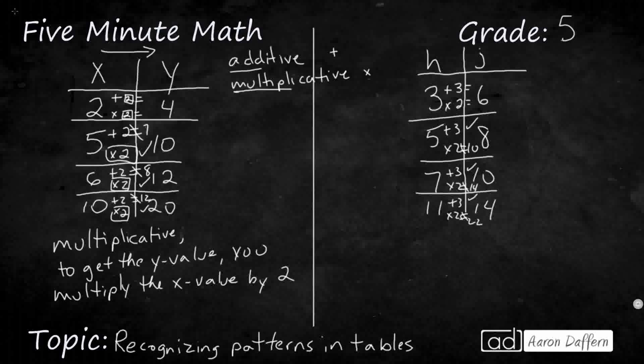All right. So whereas this first one was a multiplicative relationship, we can say this is an additive relationship, but let's explain why. And I'll write it slightly different. It's an additive relationship. And instead of saying, I could say to get the J value, you add 3 to the H value. We could say that.